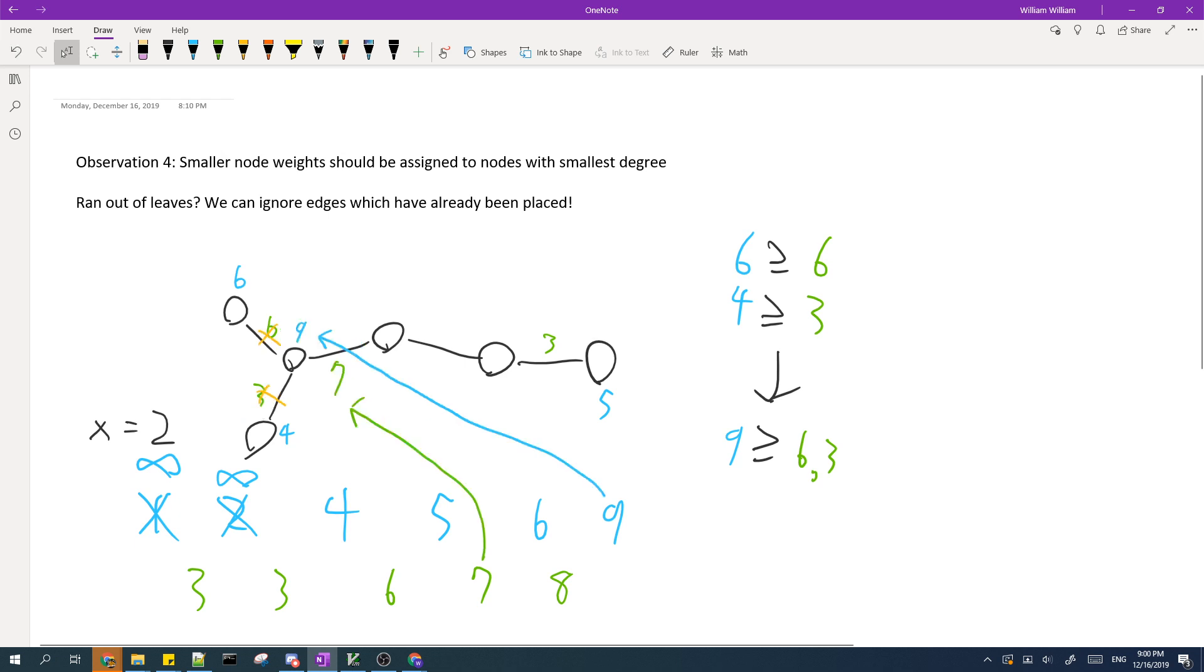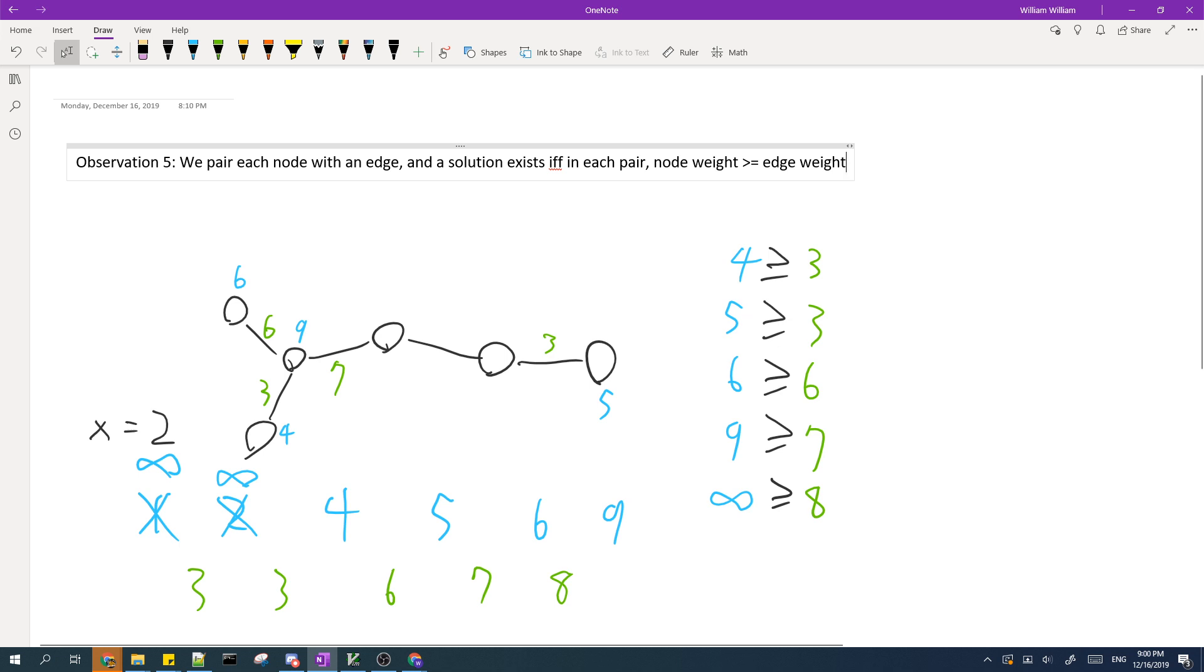So again, we place 9 as the node and the next smallest edge weight as the edge adjacent to the leaf. So what we've basically been doing so far is that we paired each node with an edge. And basically, we just need to check that if for each pair of node weight and edge weight, if the node weight is greater than or equal to the edge weight, then we will have a solution.